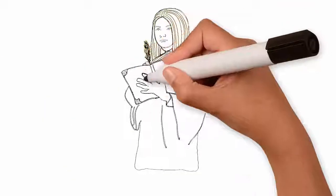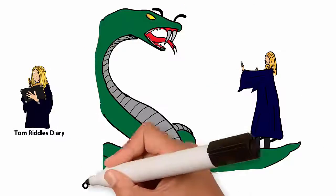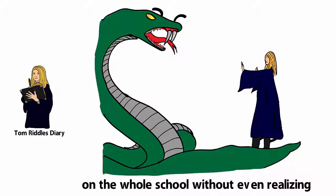And when Ginny got too close to Tom Riddle's diary, she became fully possessed and ended up setting a deadly basilisk on the whole school without even realizing.